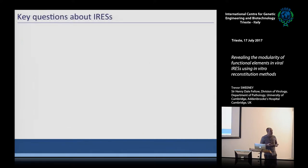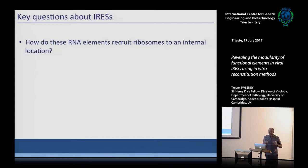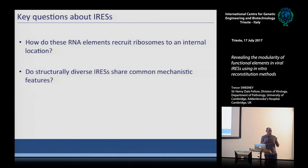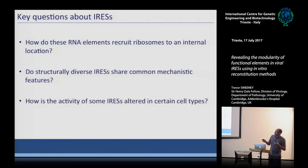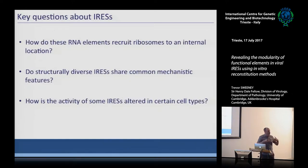There are several key questions about IRESs. First, how do these large structured RNAs recruit the 40S ribosome to an internal location to get around 5'-cap dependence? Do different IRESs, which look quite different in secondary structure, share common mechanistic features? We also know that some IRESs have altered activity in different cell types, which leads into understanding viral pathogenicity — for example, whether poliovirus or EV71 preferentially infects neuronal cells due to translation regulation.